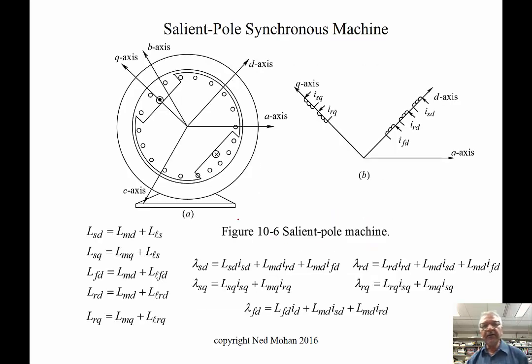Now we move on to salient pole synchronous machines. These are, as described, salient—meaning not round rotor. There's a field winding here, shown schematically like that. The field winding is supplied by DC current. In addition, there's a damper winding.